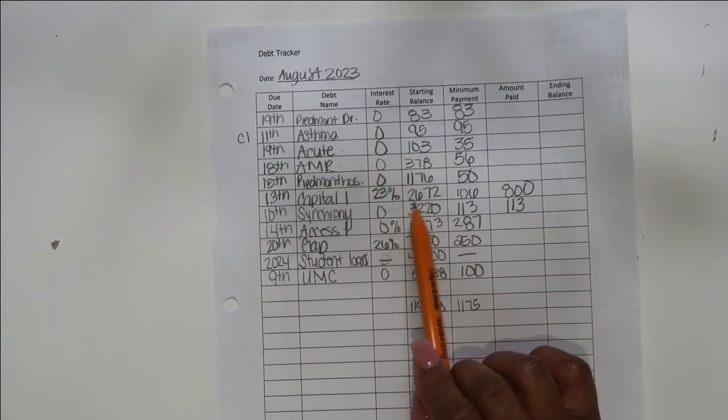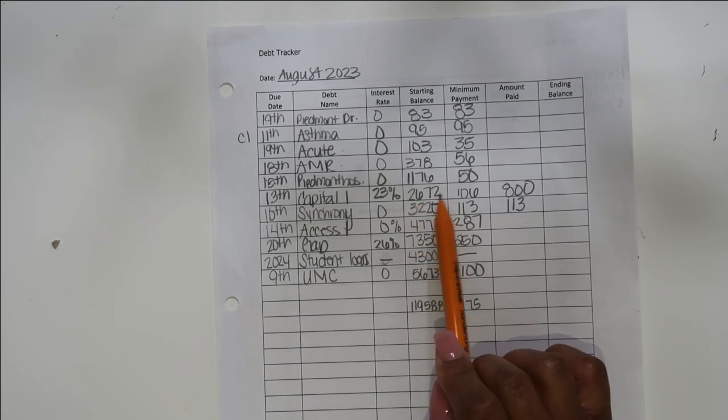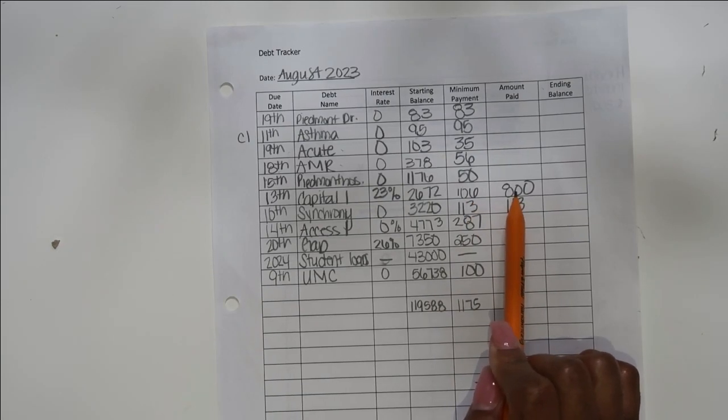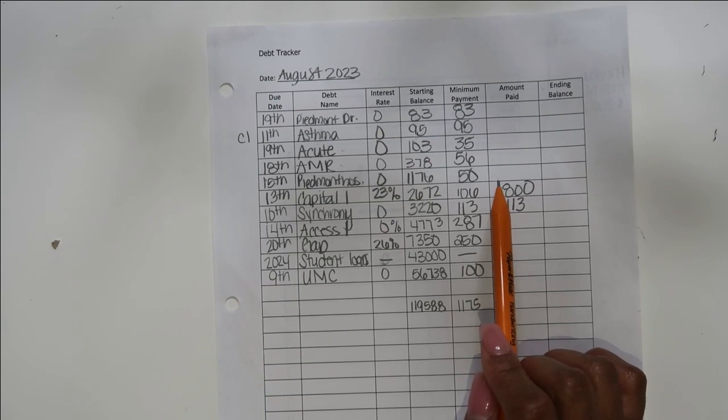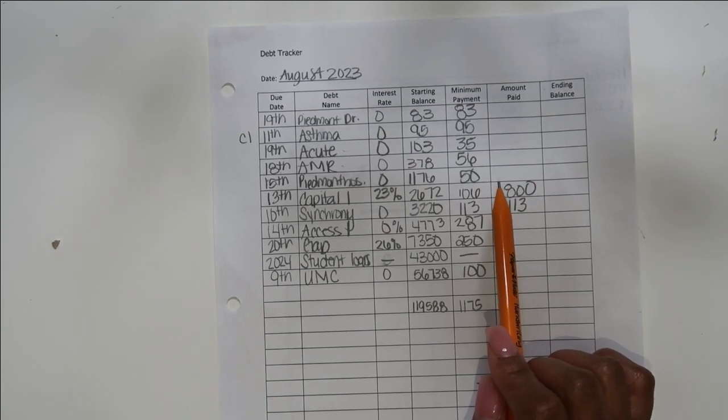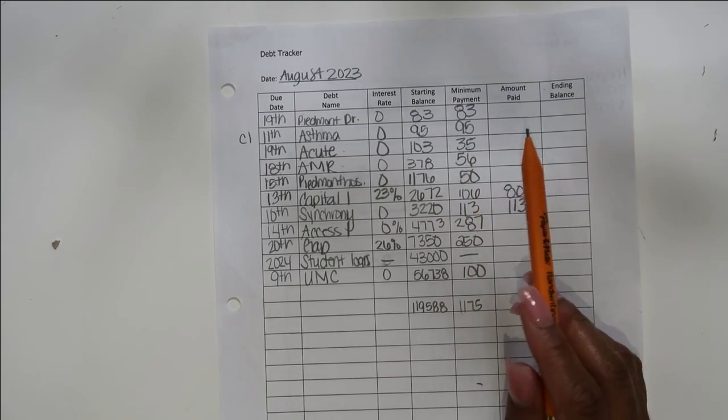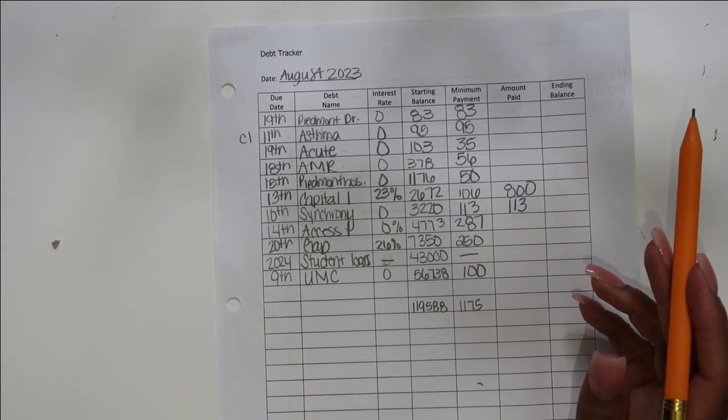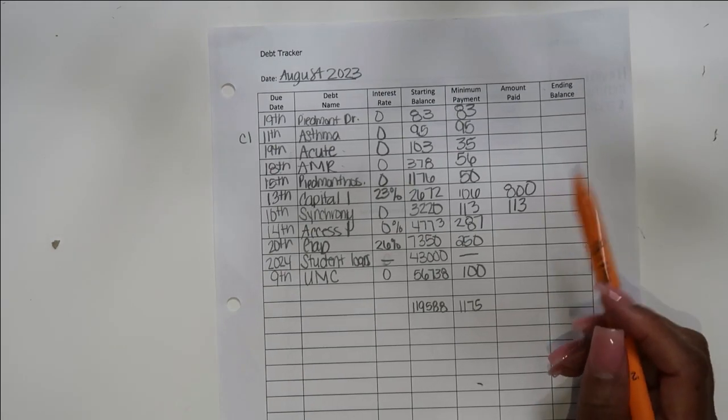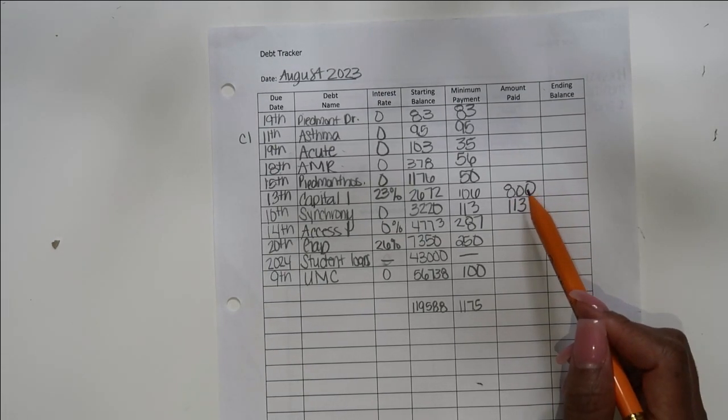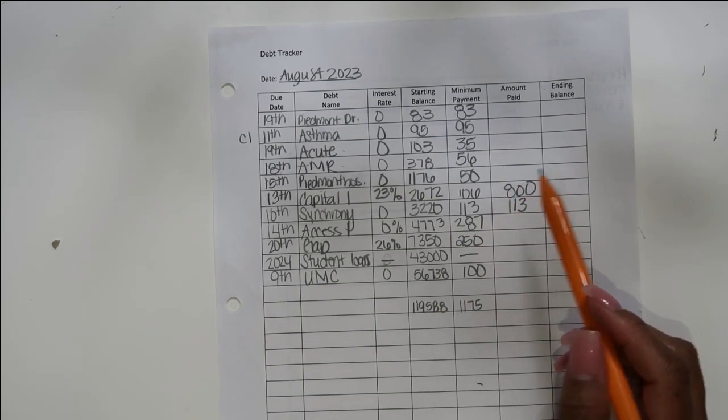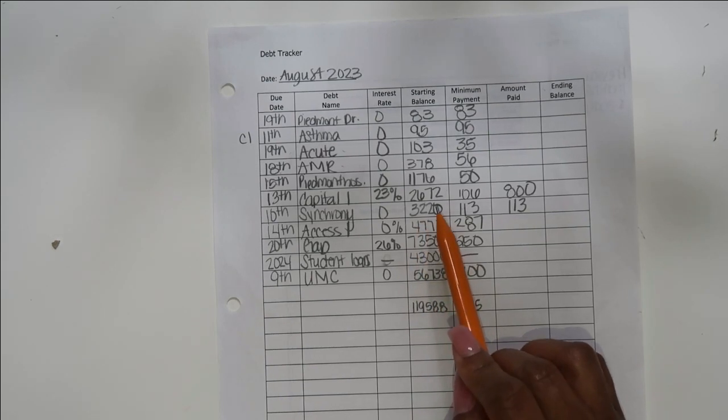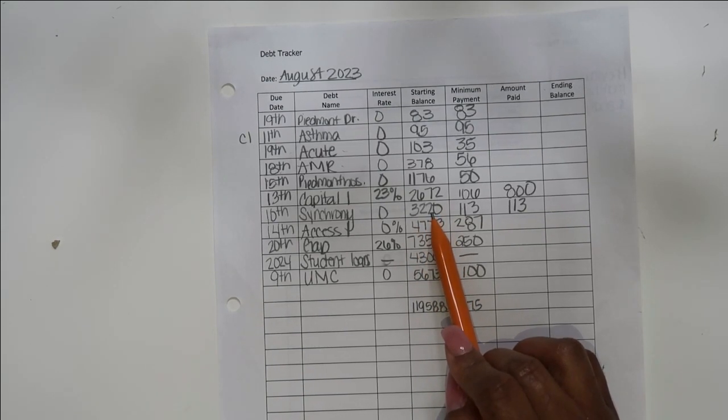Capital One has a 23% interest rate. The balance is $2,672. Minimum payment is $106. I am going to pay $800 because I went on a business trip and they reimburse us and I just put it on my credit card. I feel more comfortable putting stuff like this on my credit card versus actually using my debit card. They paid us back, so now I'm paying that off.